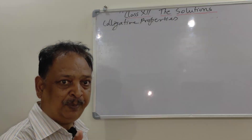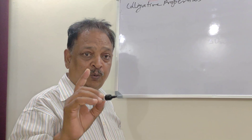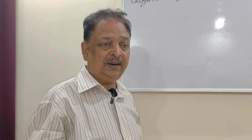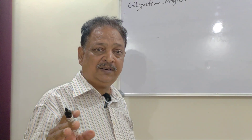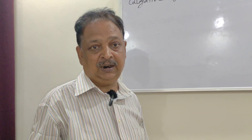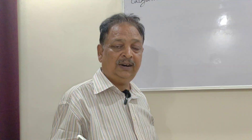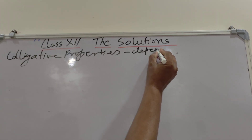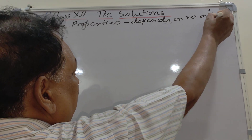The properties which depend on the number of particles are called colligative properties. It doesn't matter how big or small a particle is, whether it is a positive ion, negative ion, or neutral — none of that matters. What matters is the number — one, two, three, four; one dozen, two dozen; one mole, two mole. Mole is also a number, directly linked with Avogadro's number. So colligative properties depend on number only.